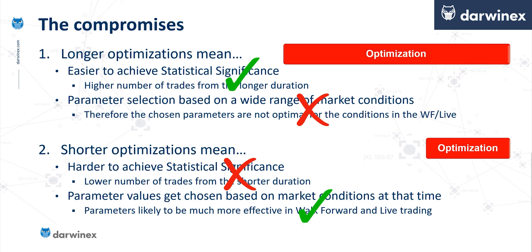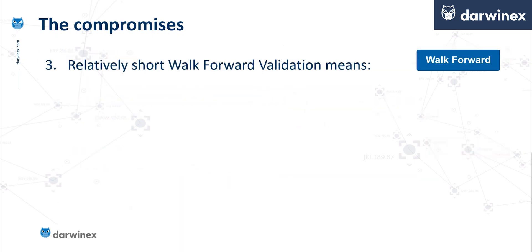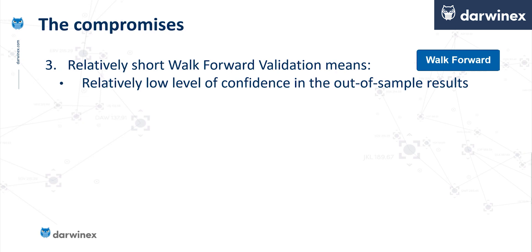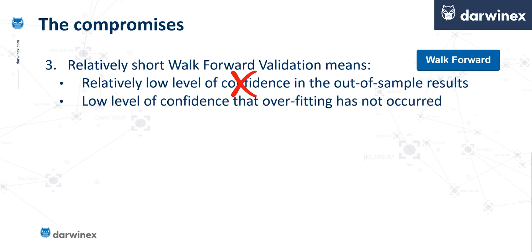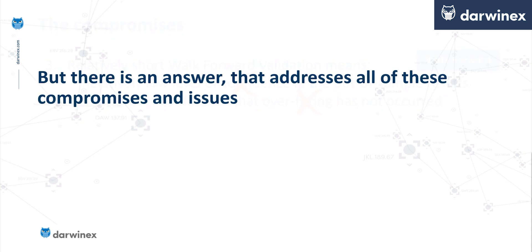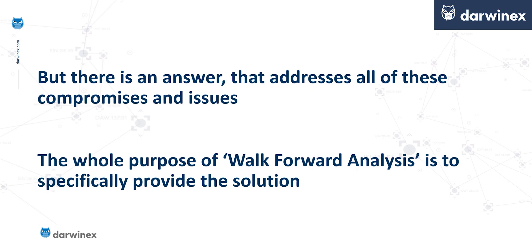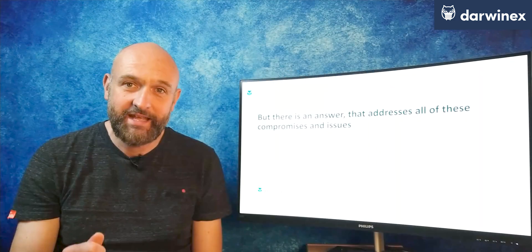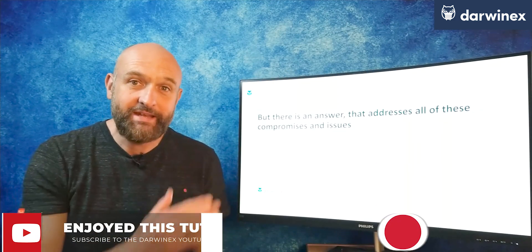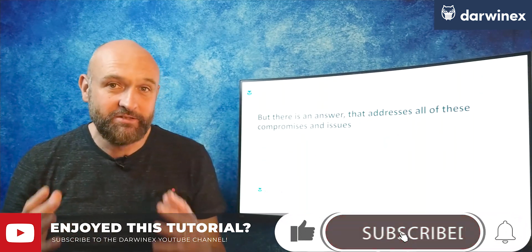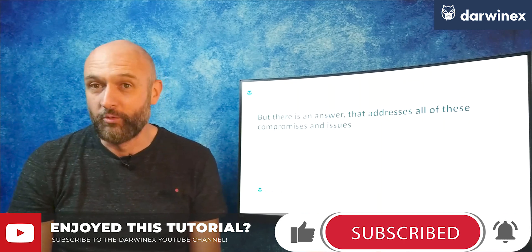Now if we turn our attention to the walk-forward phase, as we've already said, it's usually much shorter than the optimization phase, so the level of confidence we can have in the out-of-sample results is reduced, and we have much less confidence that overfitting has not occurred. But there is an answer that addresses all of these compromises and issues incumbent with the traditional approach — walk-forward analysis was originally designed to specifically enable a solution to these. Click top right now to go to the next part where I'll talk about exactly how it does this and walk you through the process of running a walk-forward analysis.